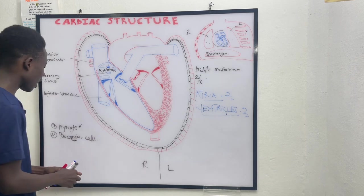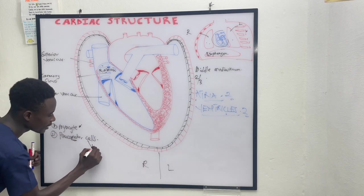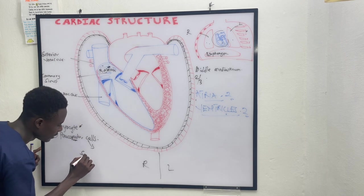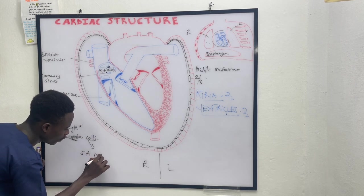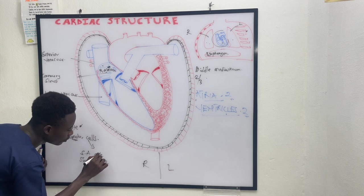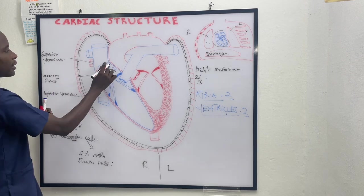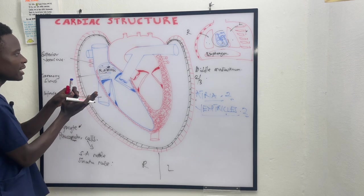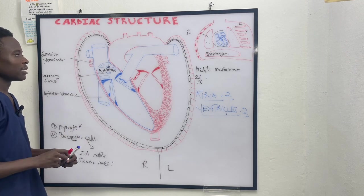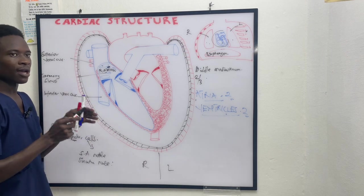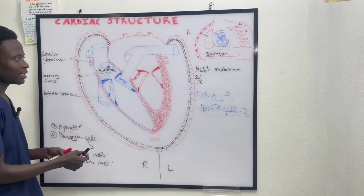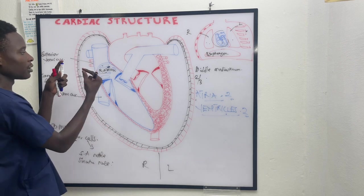We have a group of cells located beneath the superior vena cava called the sinoatrial node, or SA node. These are the pacemaker cells, and we place great emphasis on them when discussing the electrical conduction of the heart.